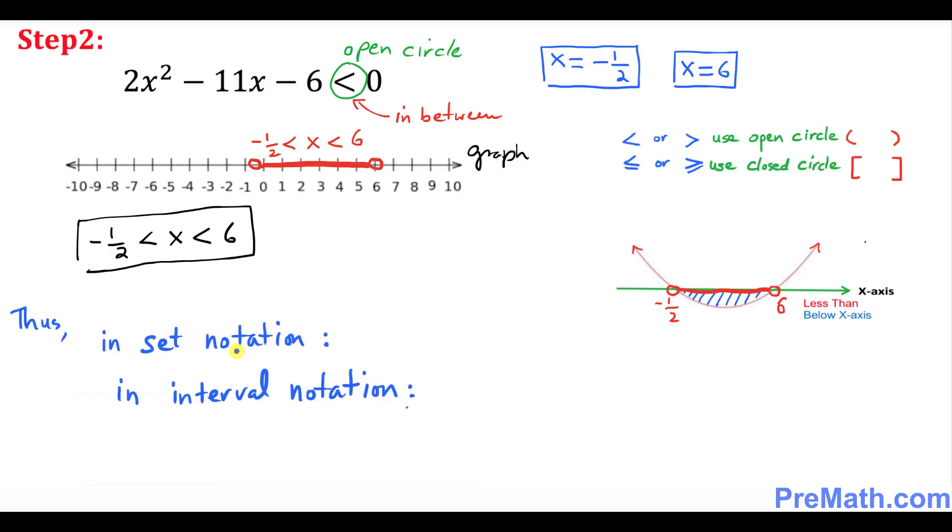And finally we want to put our solution in terms of set notation, so we can easily do that one. As you can see over here, we can put down x such that x is going to be in between -1/2 and 6. That's all we got. And for interval notation that's going to be -1/2 and 6 over here and the parentheses on both sides.